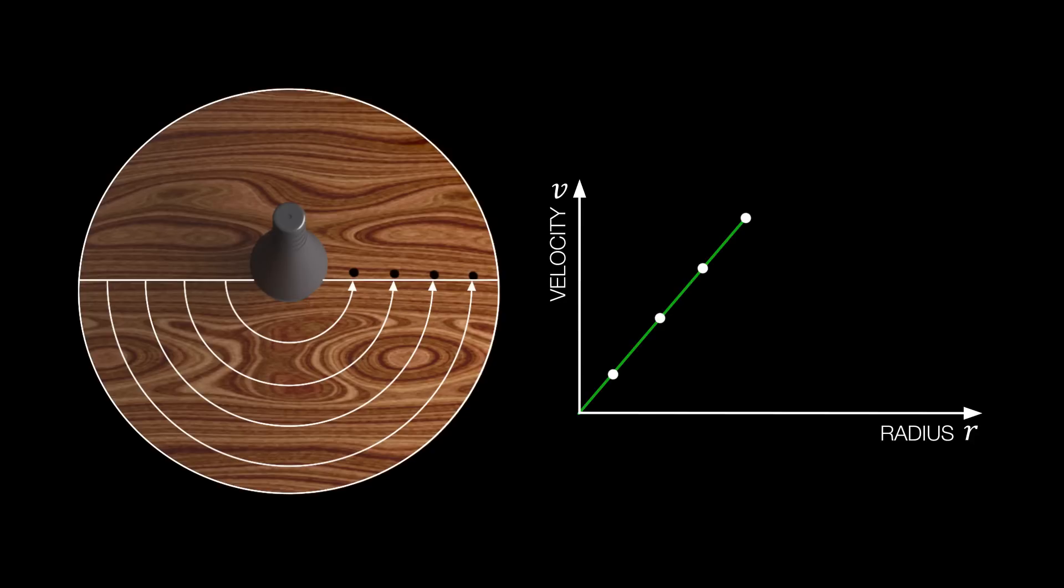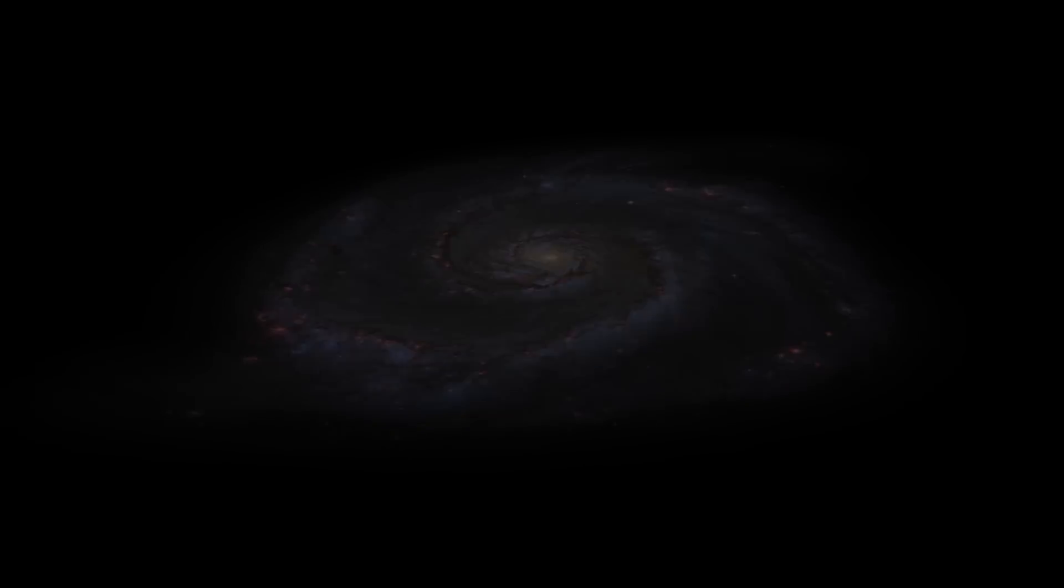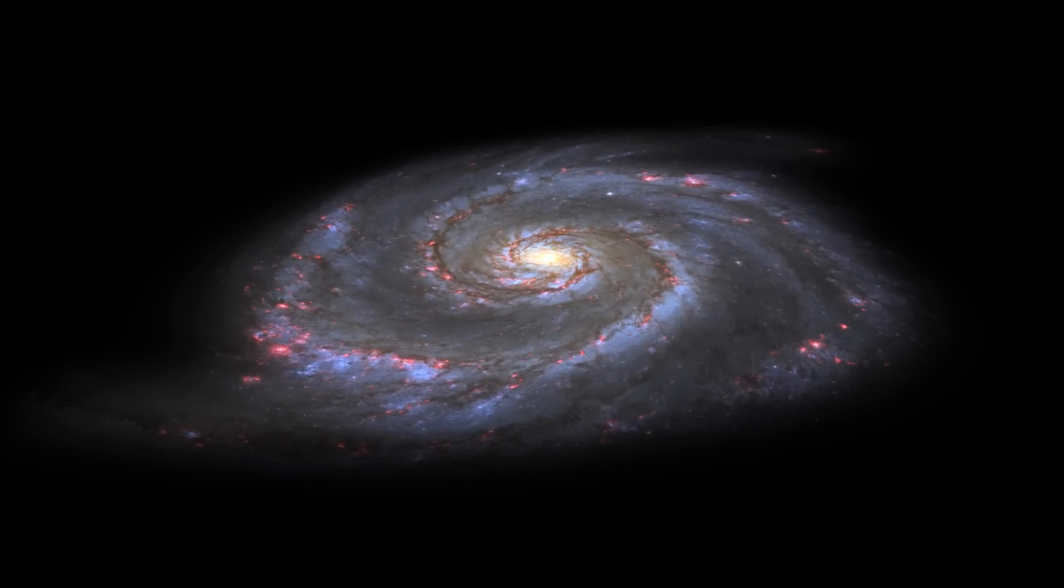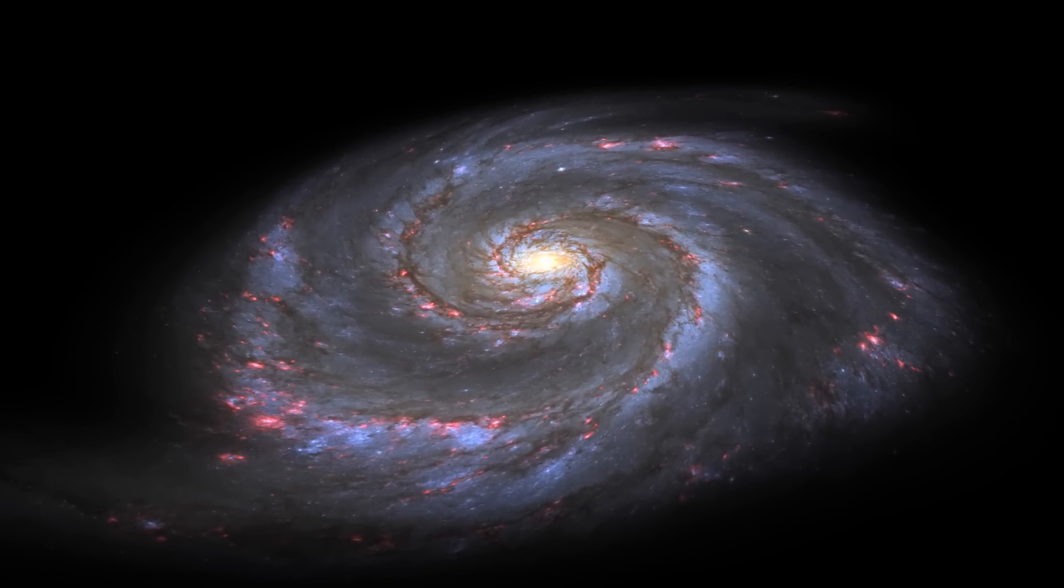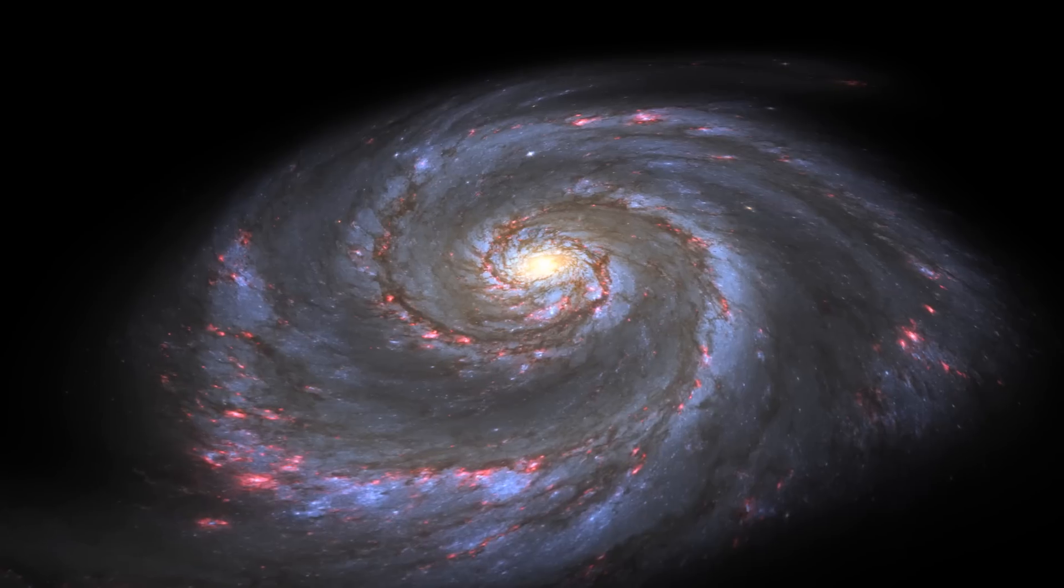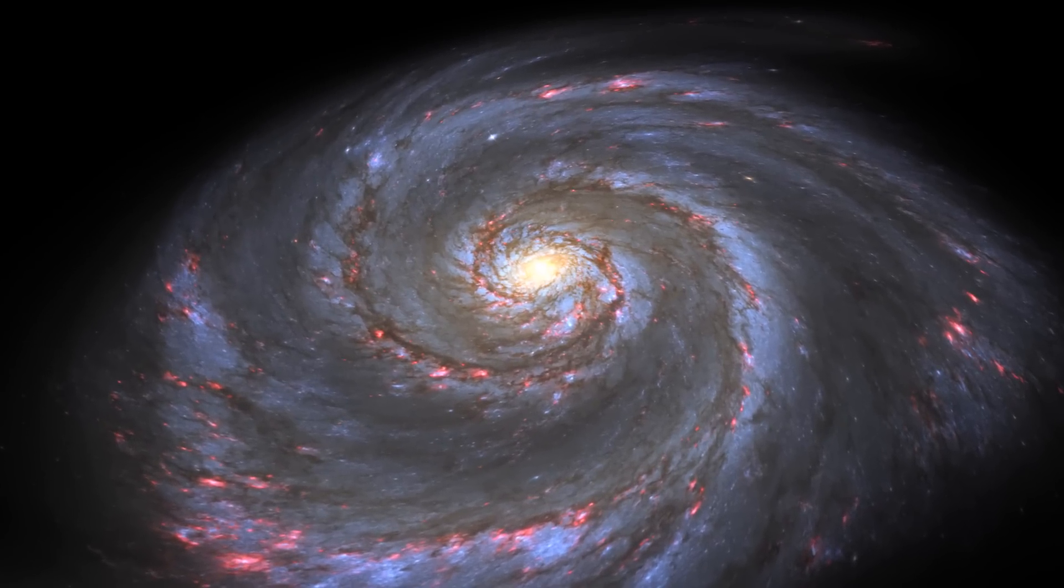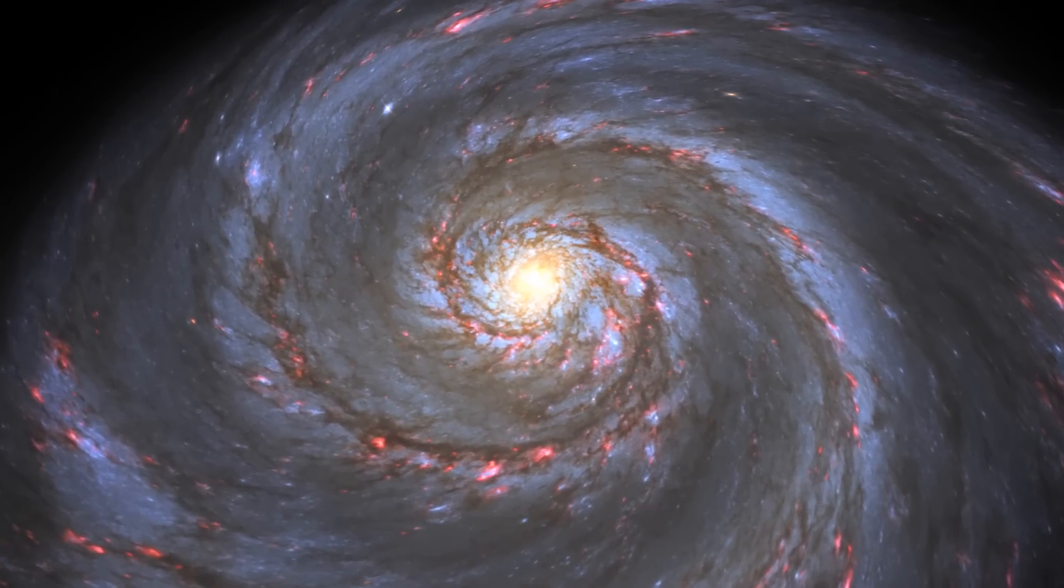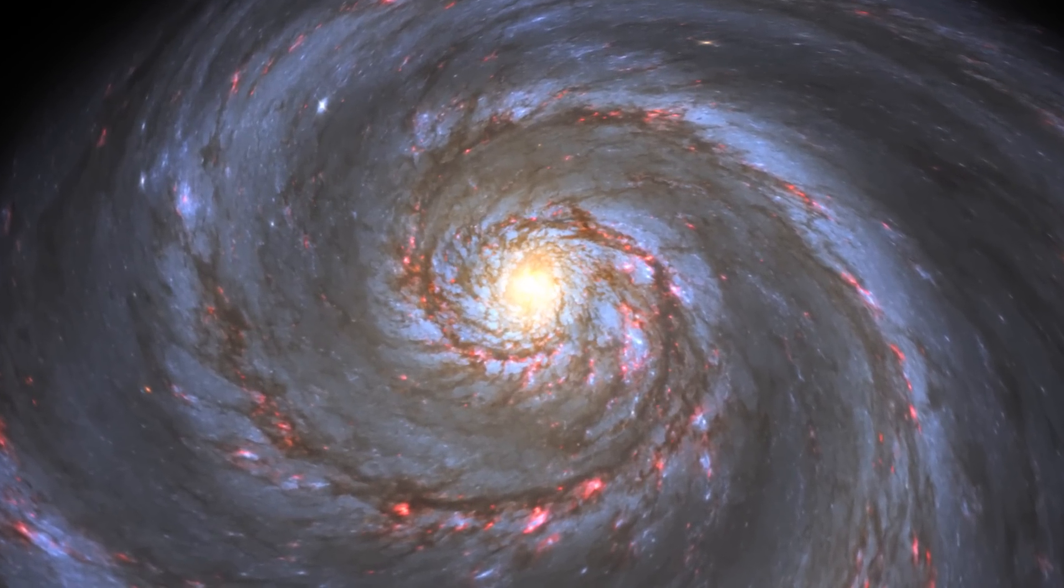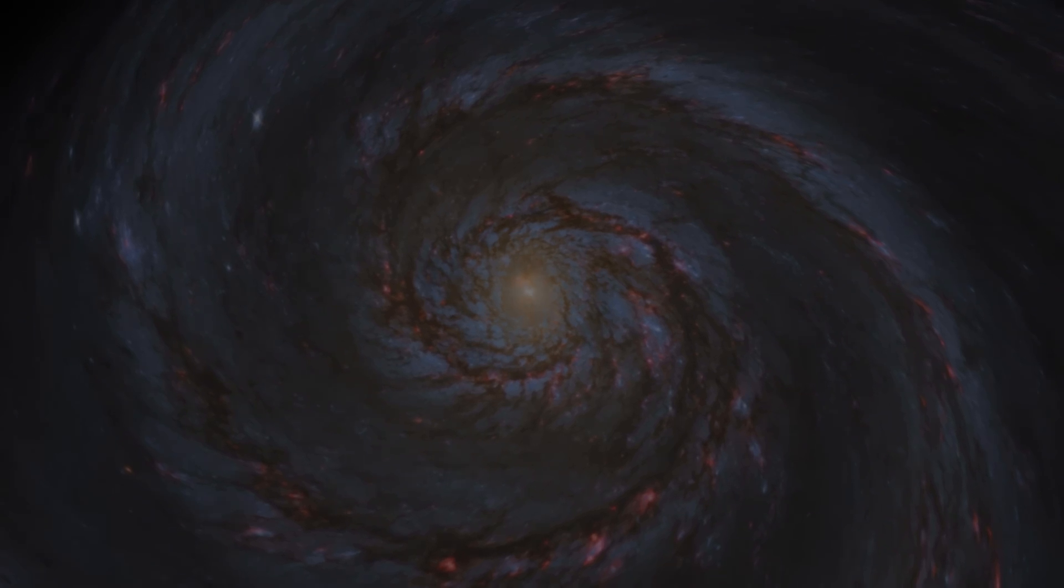In contrast to a planetary system in which 99.9% of the total mass of the system is concentrated in the central star, a galaxy consists of over 100 billion individual stars forming a complex gravitationally interacting rotating system. Thus, the rotational dynamics of a galaxy is not at all comparable with the orbital dynamics of a planetary system.